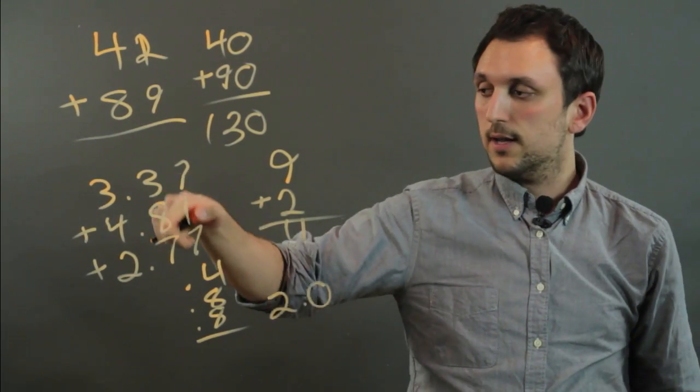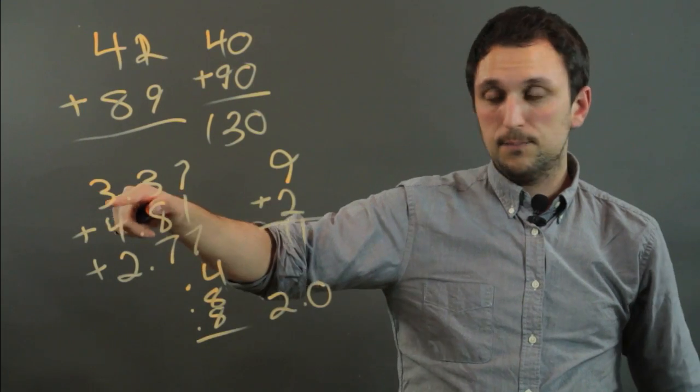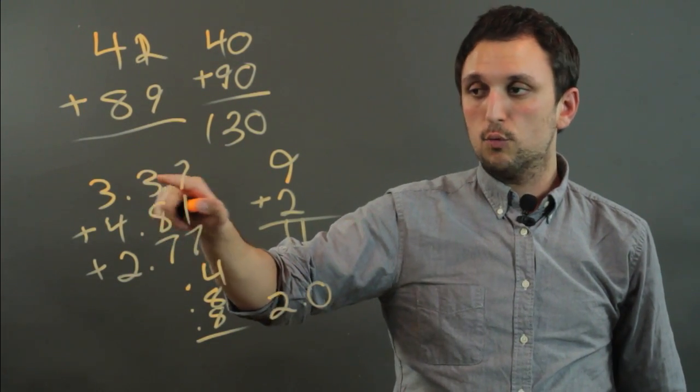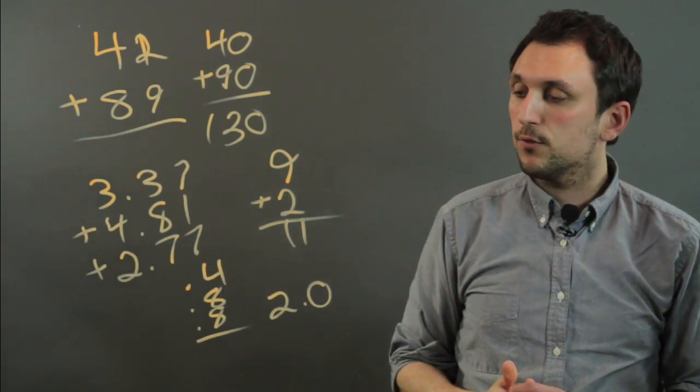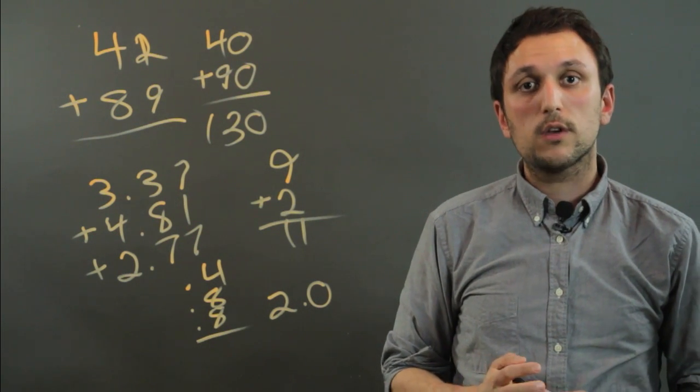So when we use front-end estimation with decimals we add the units digits then we add the rounded to the nearest tenth tenth digit and that is front-end estimation. So I'm Charlie Kasov. Thanks a lot.